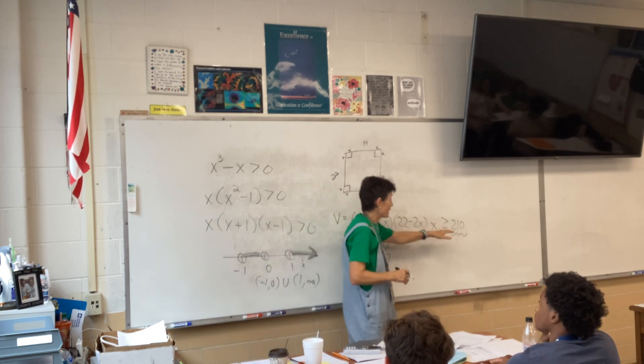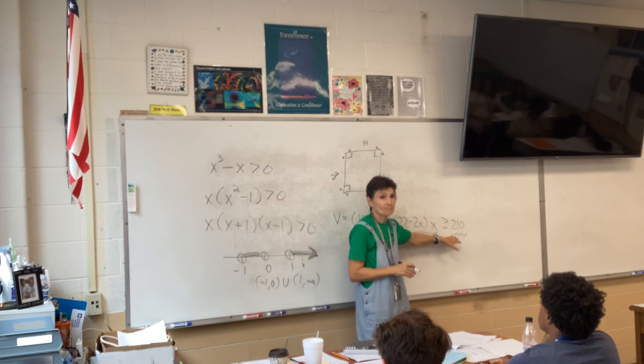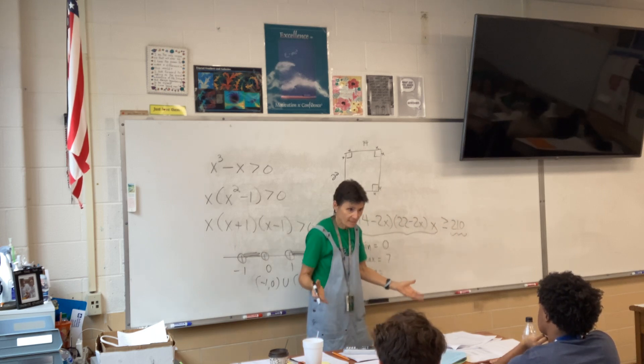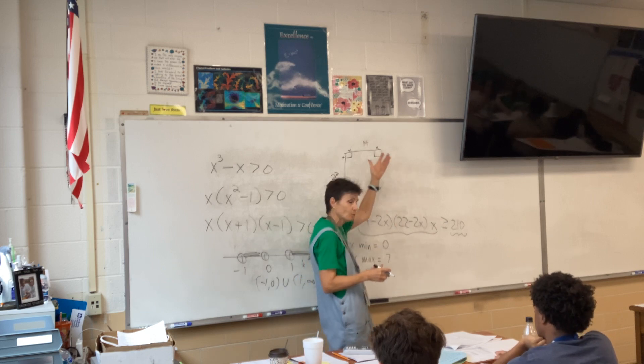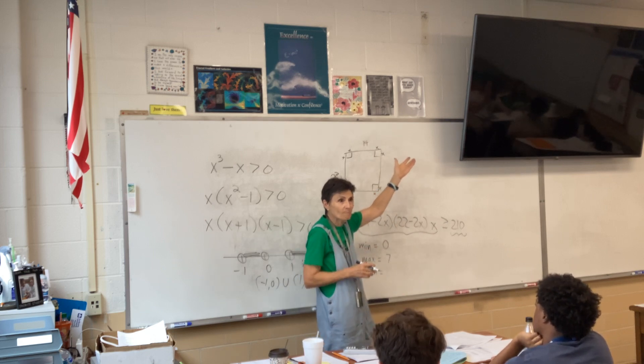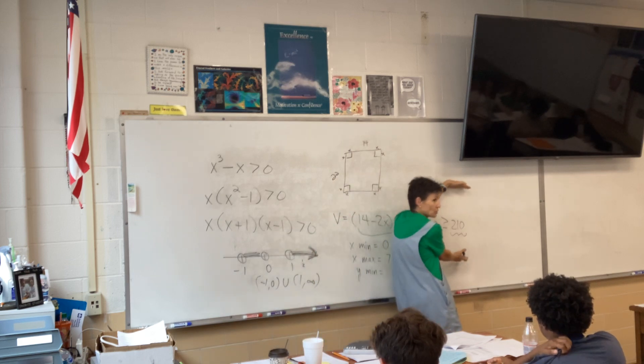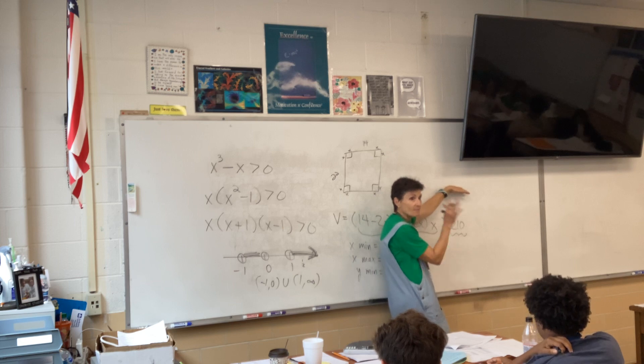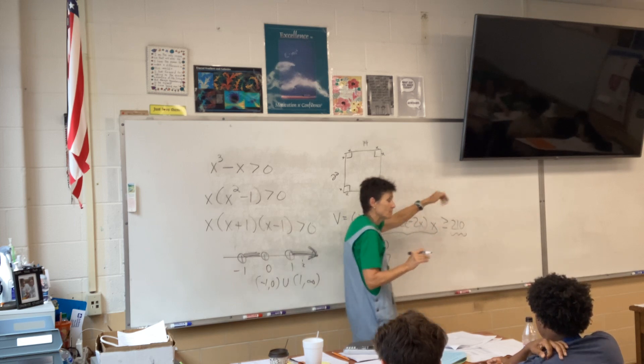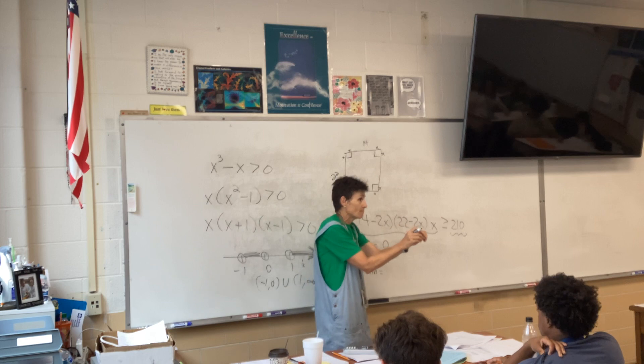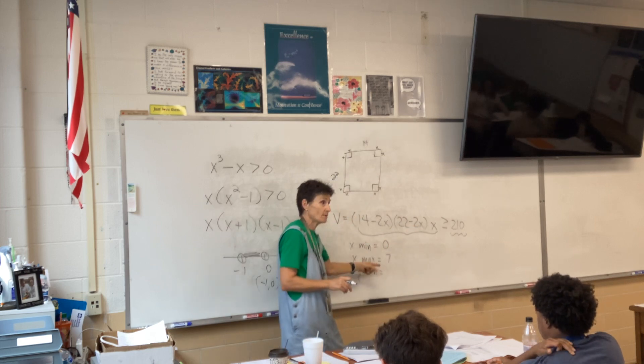Well, technically, yeah. But, when I graph this thing, aren't I, if I do it with intersections, aren't I going to put a line at 210? Right? So, I can go all the way down to zero if I want, and then up to, I don't know, 250 or something.